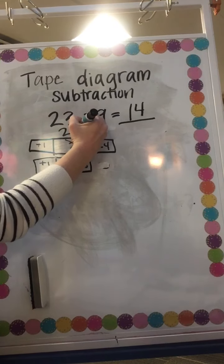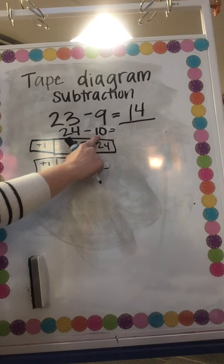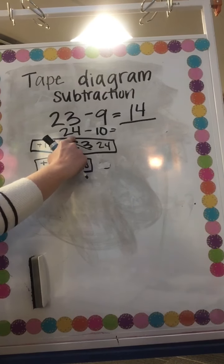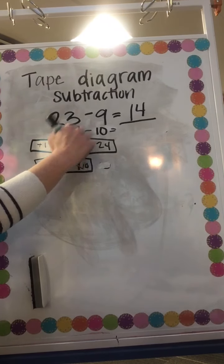Well now my new equation that I have is 24 minus 10, and I can do that in my head because 10 is a landmark number and I know that based off of my hundreds chart when I have 24 I just need to move a column.